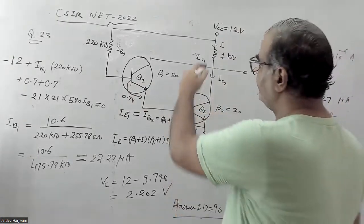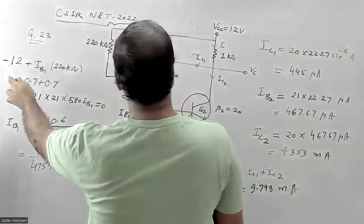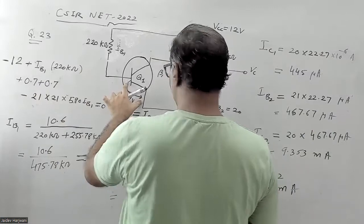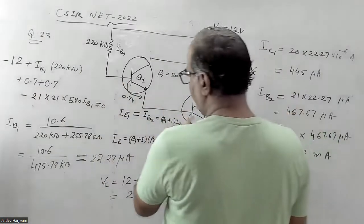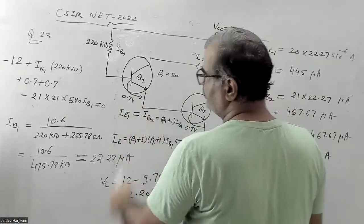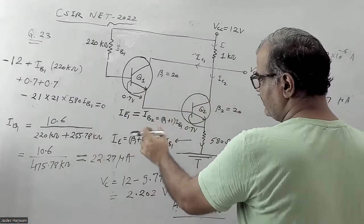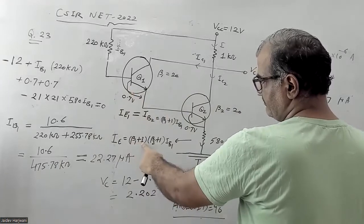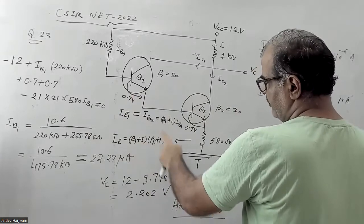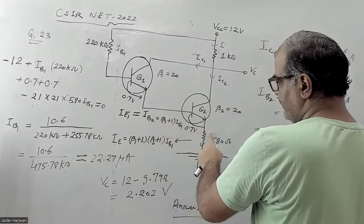I should apply KVL in this first circuit. Once I apply KVL, we have been given VCC as well. From the voltage drop equation involving IB1: this voltage drop is 0.7 and here voltage drop is 0.7 as well. This gives us IE1, which is equal to IB2. The current flowing in this resistor will basically be beta 1 plus 1 into beta 2 plus 1 into IB1, because IB2 is beta 1 plus 1 times IB1, and beta 2 plus 1 gives IE2.